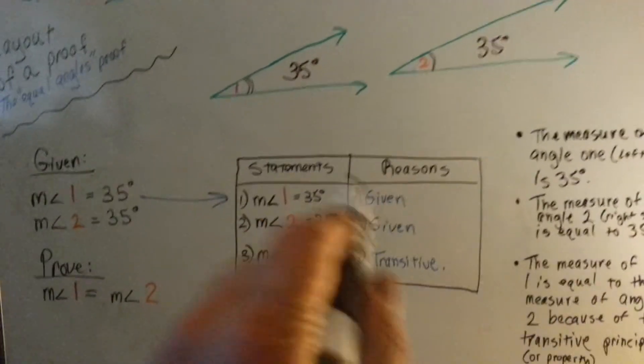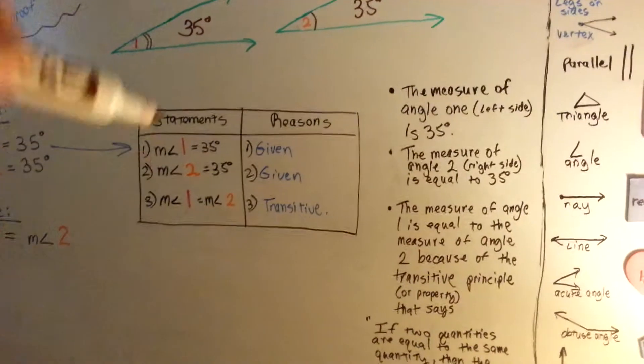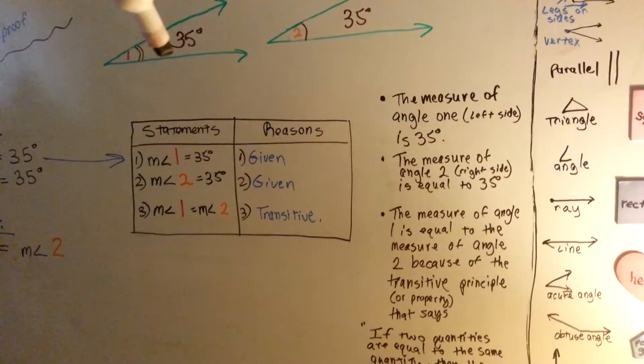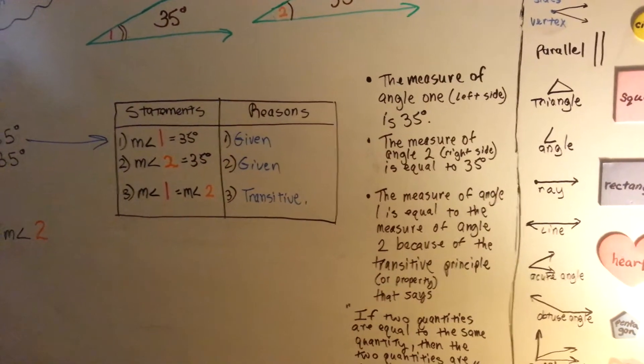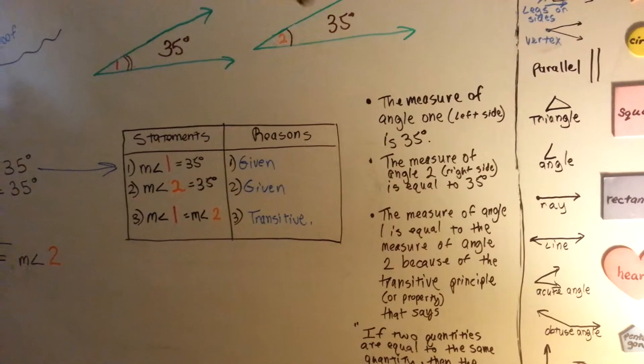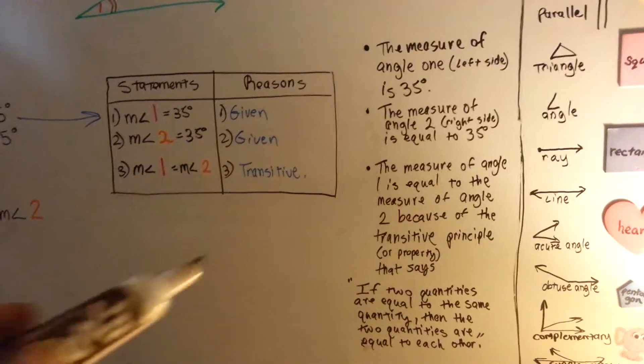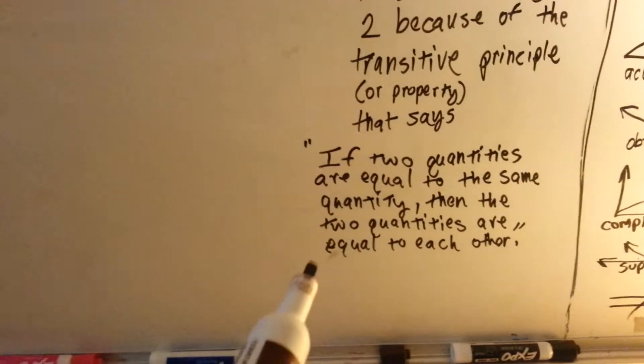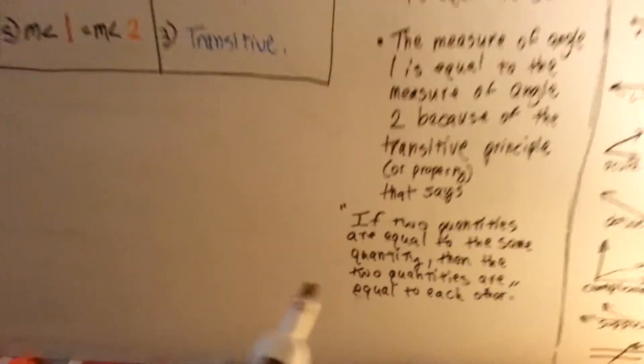Now, here's what this really means. Here's my notes on the side. The measure of Angle 1 on the left side is 35 degrees. The measure of Angle 2 on the right side is 35 degrees. The measure of Angle 1 is equal to the measure of Angle 2 because of the transitive principle or transitive property. That says if two quantities are equal to the same quantity, then the two quantities are equal to each other.